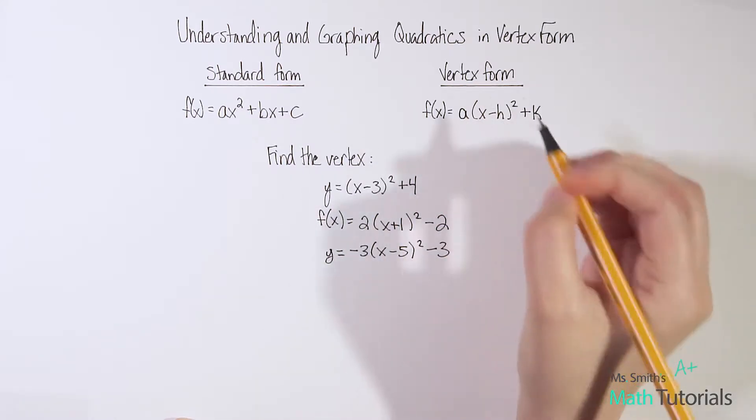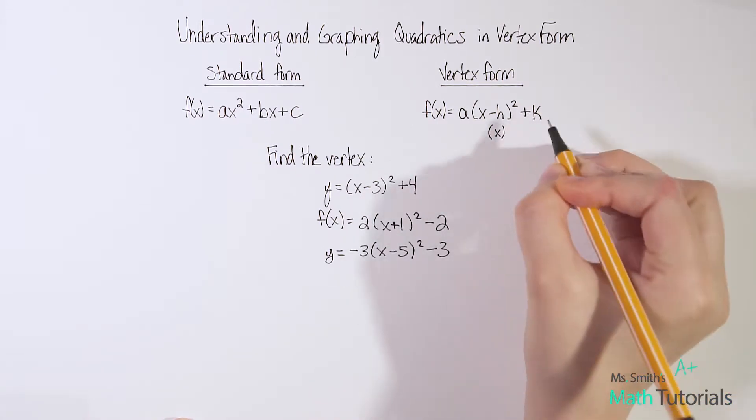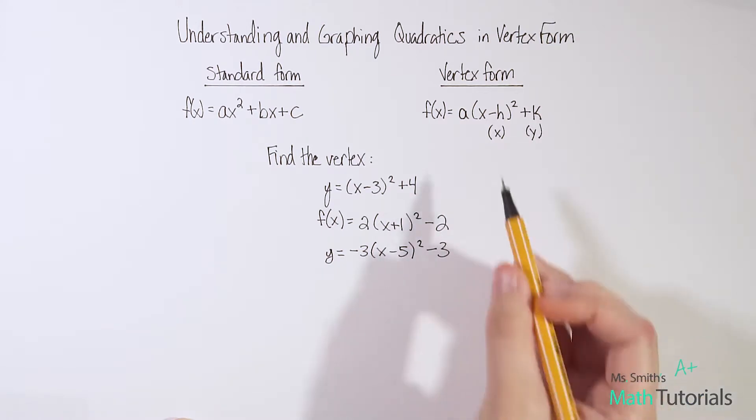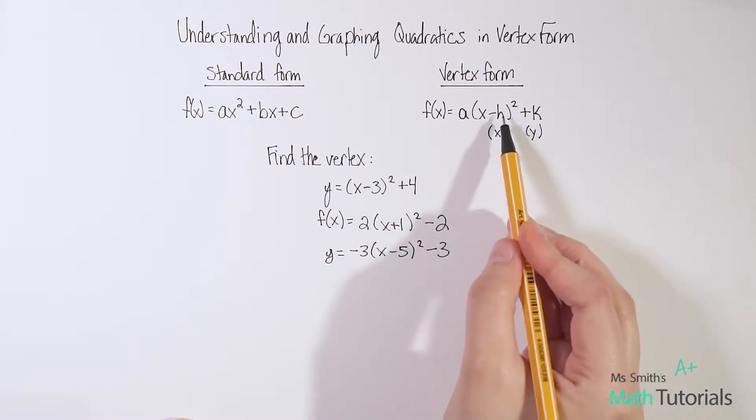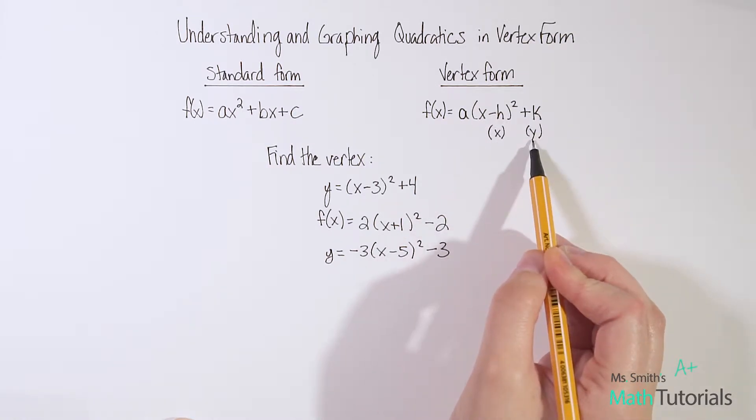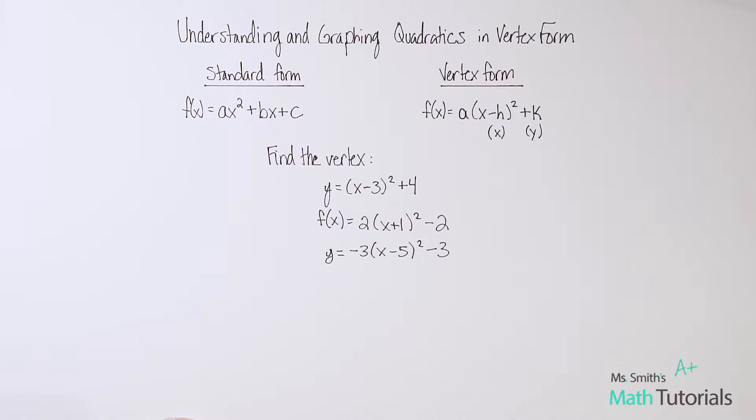So for this first example, y equals (x-3)² plus 4. Now what's important to understand, notice how this matches up very well. Now the a, you might be saying well there's no a out there. Well that means a is an understood 1, an understood positive 1. Your h is your x, and the k, that's your y. So when we go to figure out the vertex, you just want the h, the negative h value, and we'll talk about that in a second, and your k value as your y. So x comma y, h comma k, same thing.